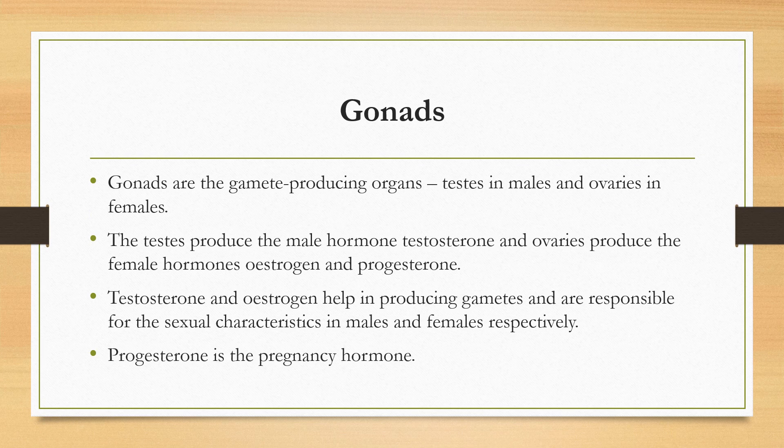The gonads are gamete-producing organs: testes in males and ovaries in females. Testes produce the main hormone testosterone, while ovaries produce the female hormones estrogen and progesterone. Testosterone and estrogen help in producing gametes and are responsible for sexual characteristics in males and females respectively. The function of testosterone is to control the development of male sex organs and male features such as deeper voice, moustache, beard, and more body hair. All these changes are associated with male puberty.